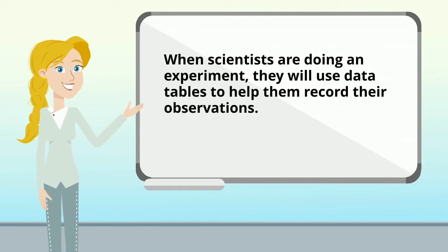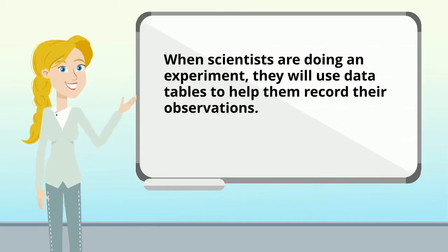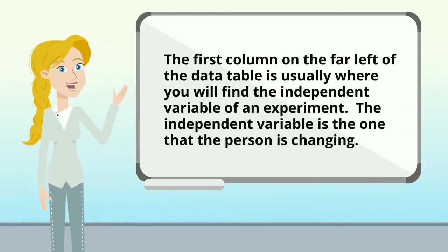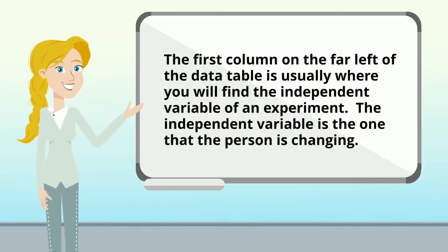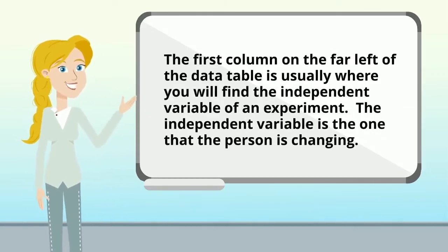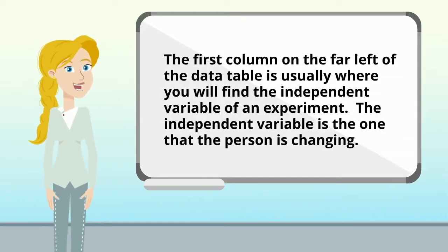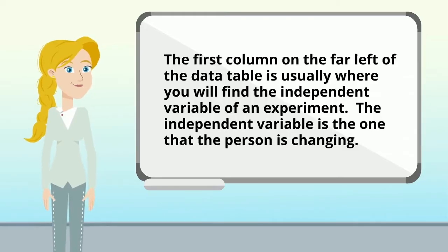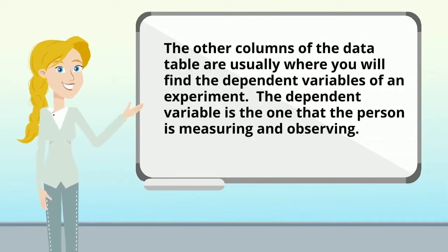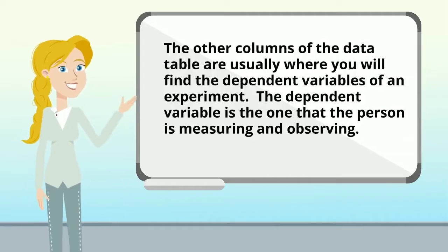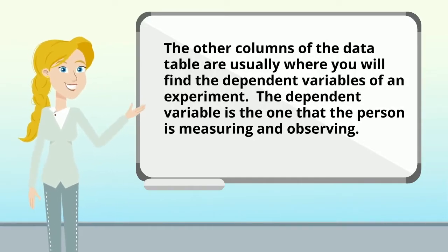When scientists are doing an experiment, they will use data tables to help them record their observations. The first column on the far left of the data table is usually where you will find the independent variable of an experiment — the one that the person is changing. The other columns are usually where you will find the dependent variables, which are the ones the person is measuring and observing.